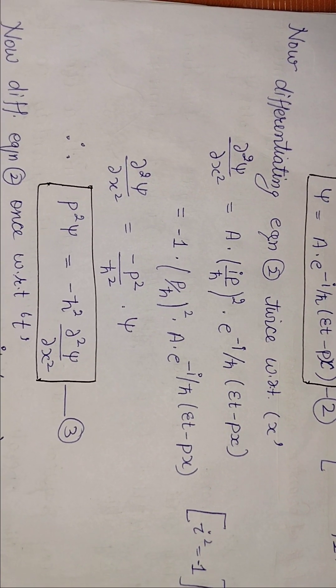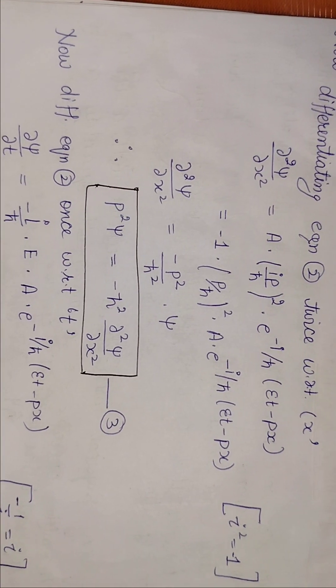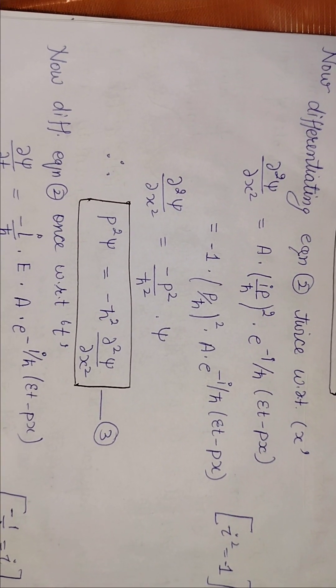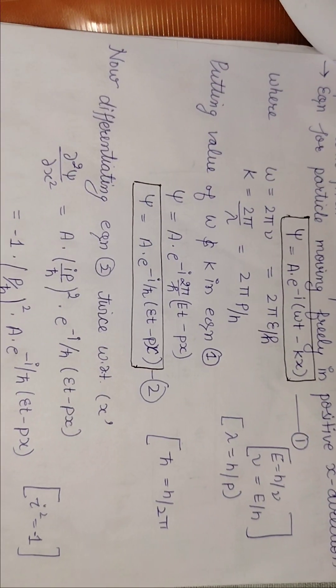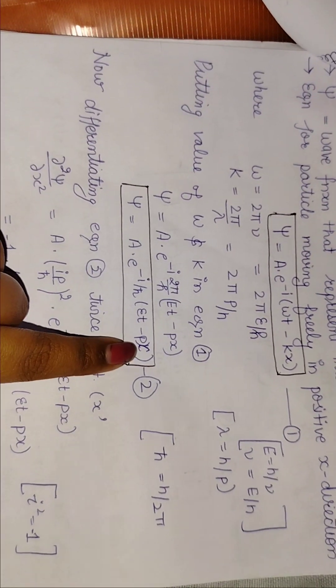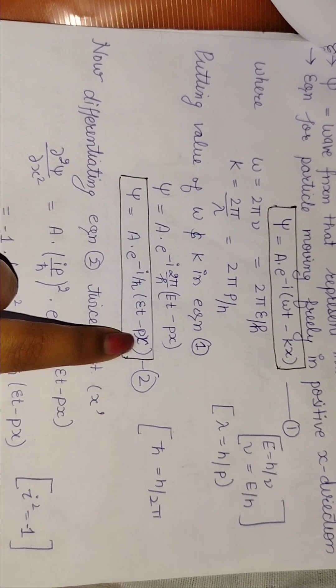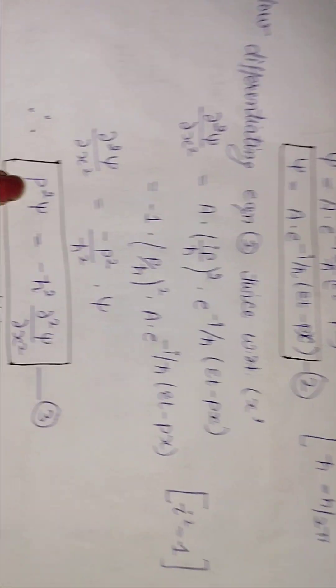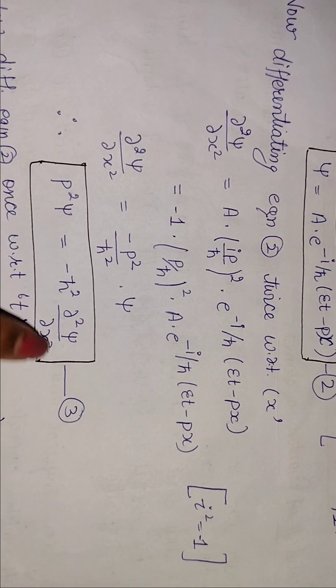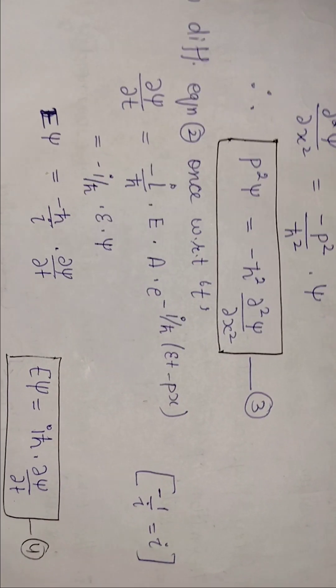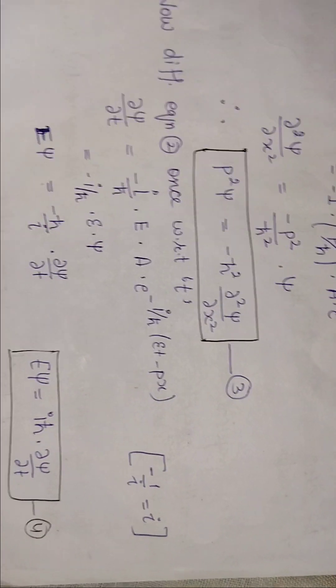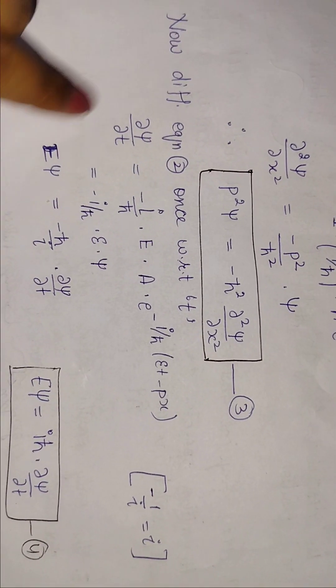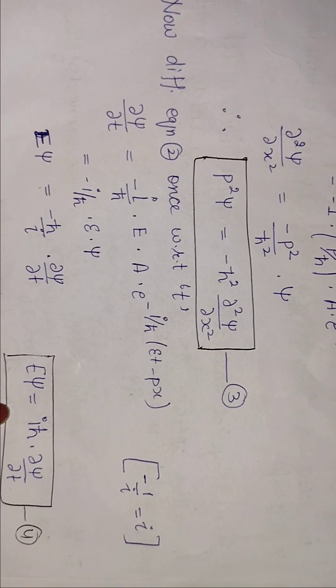And after that, when we take differentiation with respect to t, we have here p². When we have t with single differentiation, we have a value of E·ψ. So this differentiation will be solved by E·ψ.